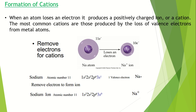When an atom loses an electron it produces a positively charged ion or a cation. The most common cations are those produced by the loss of valence electrons from metal ions. The electronic configuration of sodium is 1s2, 2s2, 2p6, 3s1. One valence electron is removed and sodium is changed into a positive ion.